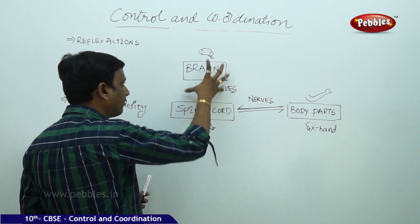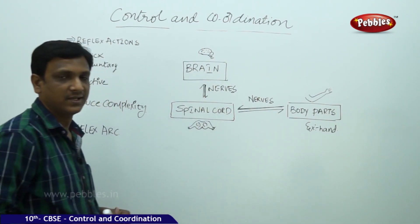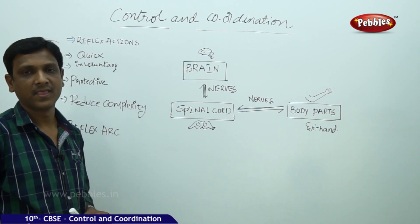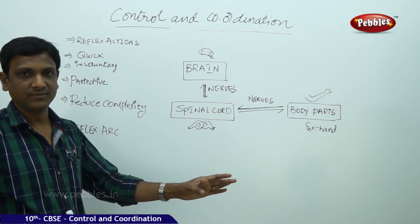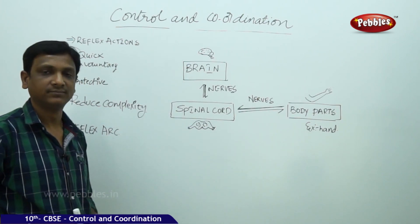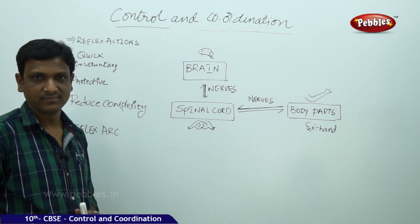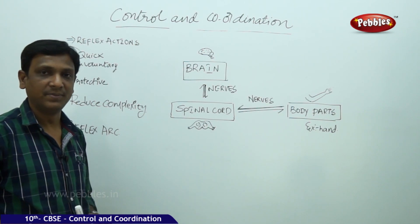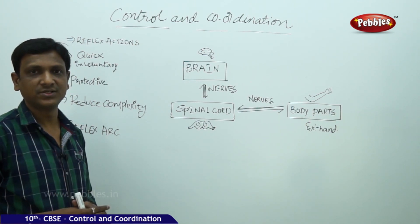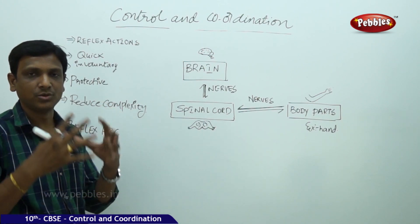We have two major parts of our nervous system — the spinal cord and brain — which comprise the central nervous system. So information is taken to the spinal cord and brain. For example, when we see a movie, the images, the colorful pictures and the sound, everything is taken to our mind.